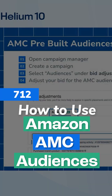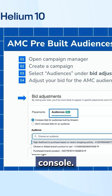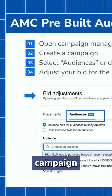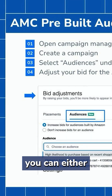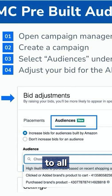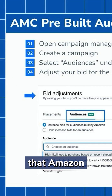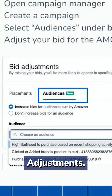So where does AMC audiences really come into play here? AMC audiences are now pre-built into your advertising console. If you go into campaign manager, you can either create a campaign or you can apply this to all of your historical campaigns. Once you open up a campaign, you're going to see that Amazon now has a section called bid adjustments.